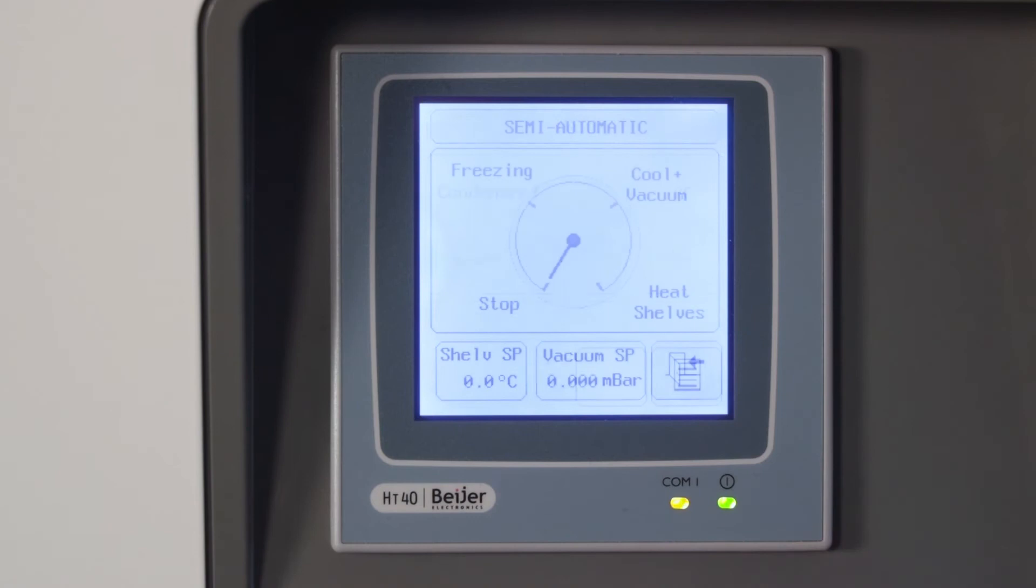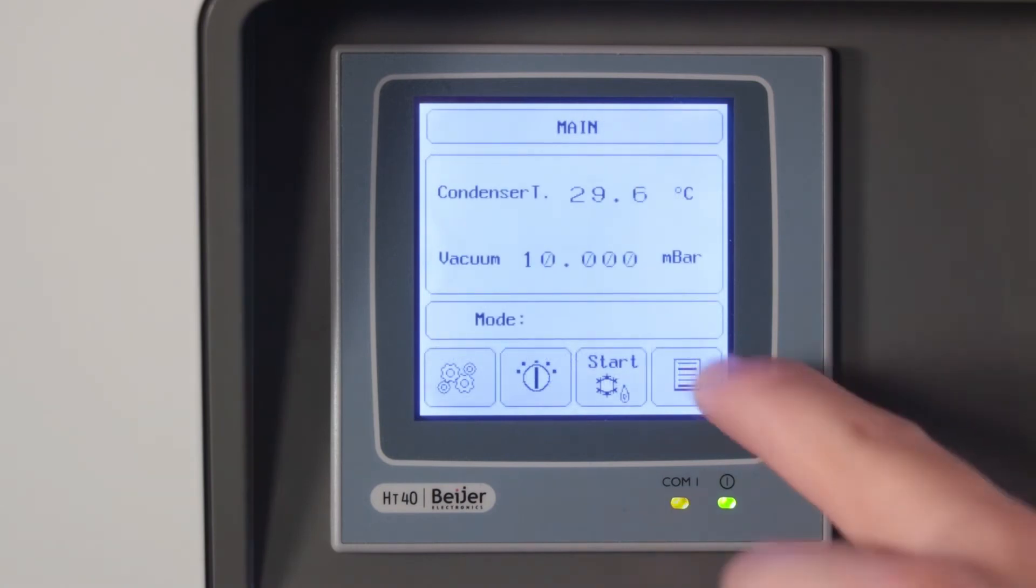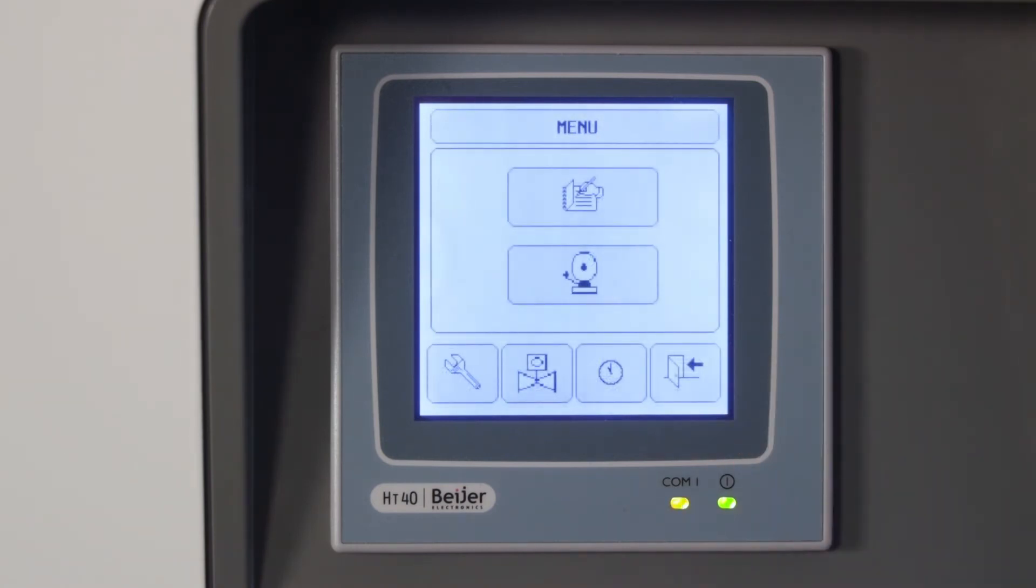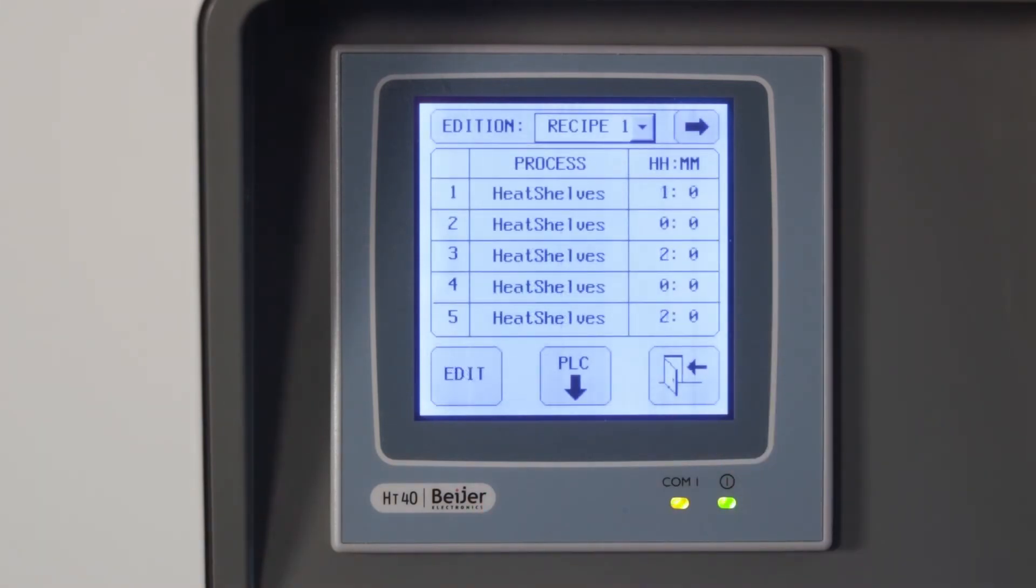The fourth button of the main screen is used to access the menu. The menu is used to program a recipe, to visualize an alarm, and to access your parameters. The first of them leads to the recipe edition screen.